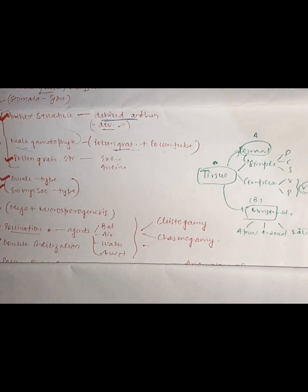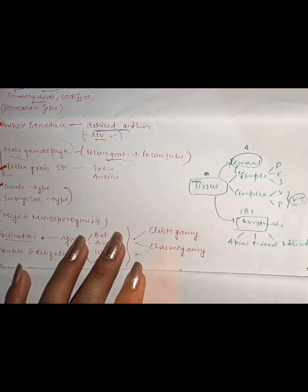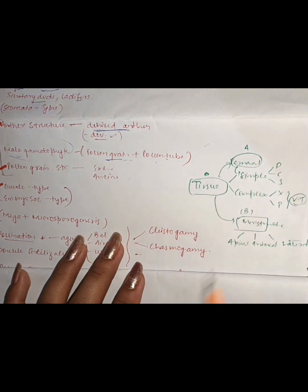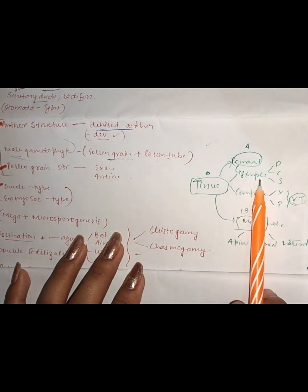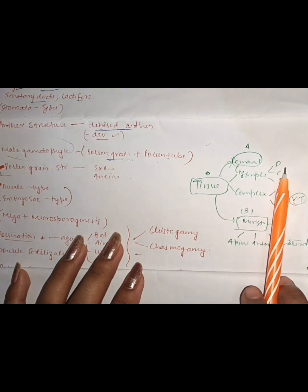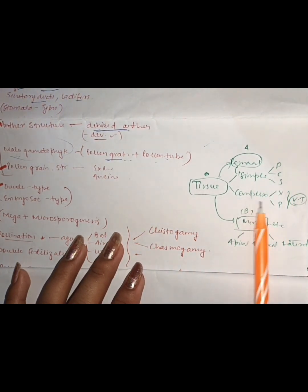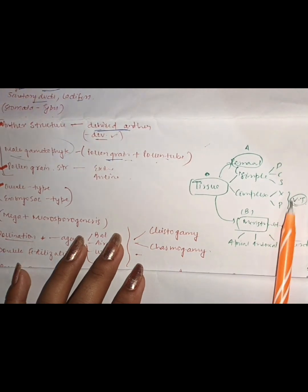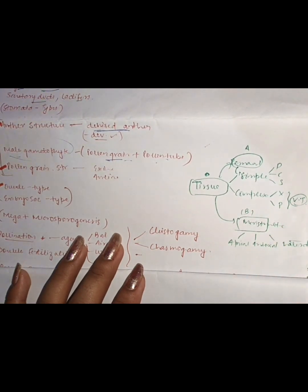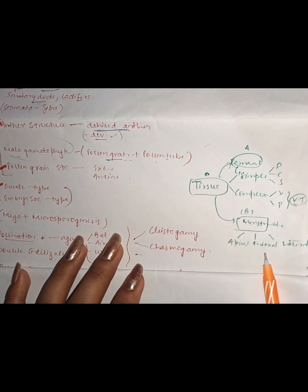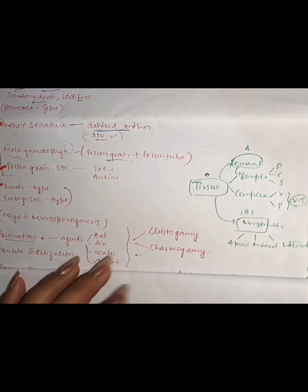If you have time, you should cover the tissue structure in plants. There are two types of plant tissues: permanent tissue and meristematic tissue. Permanent tissue is divided into simple tissue and complex tissue. Simple tissue is divided into three parts: parenchyma, collenchyma, and sclerenchyma. The complex portion is divided into two parts: xylem and phloem, which we call vascular tissue. Meristematic tissue is divided into three parts: apical meristematic tissue, intercalary, and lateral.